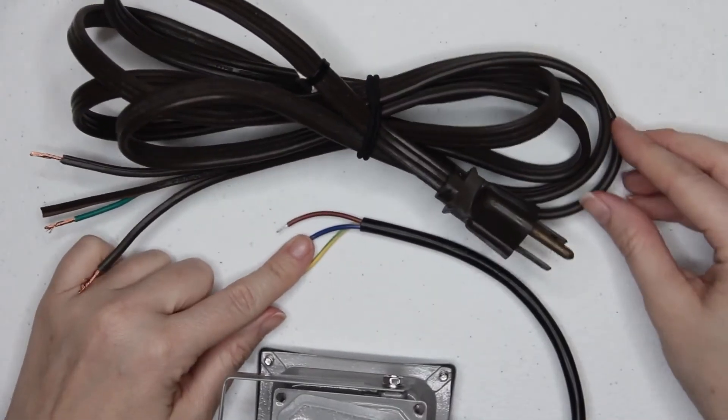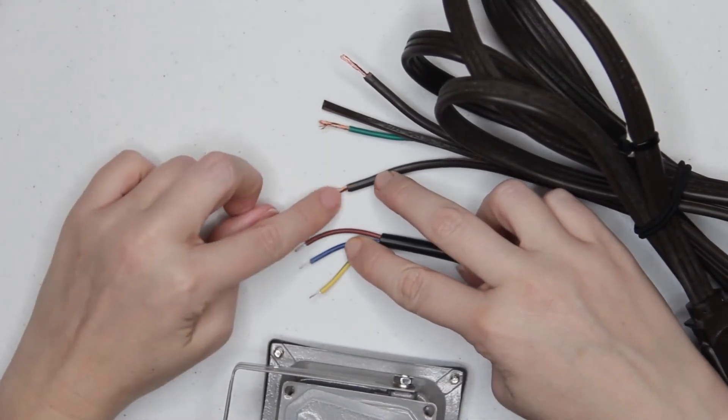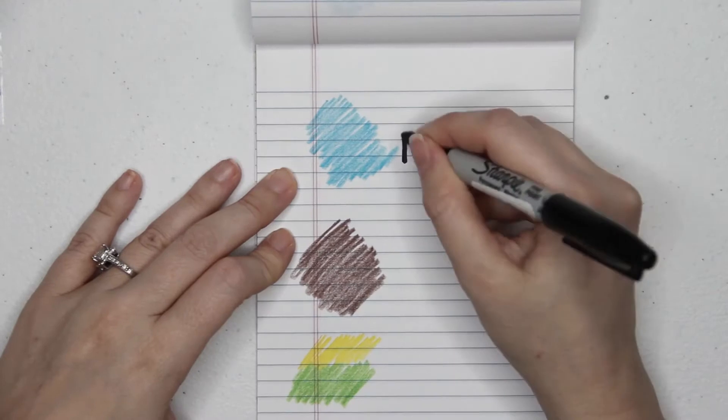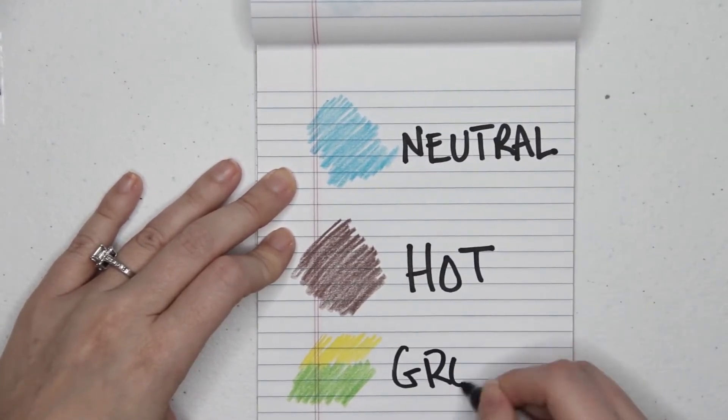So now I have to attach the three wires from the floodlight to the three wires from the extension cord. The floodlight manufacturer says blue is neutral, brown is hot, and yellow-green is ground.